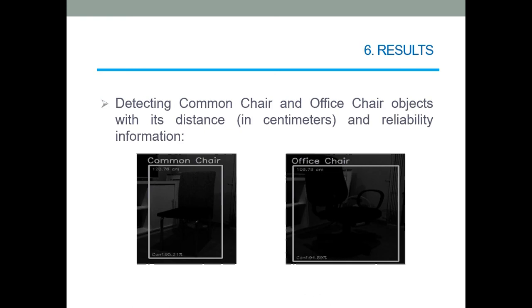Having the distance information and the weights needed to detect the objects, then it was preceded to the practical tests. In this slide, you can be seen the detection of a common chair object and the office chair object. In the detection is made a box that indicates the object's localization.